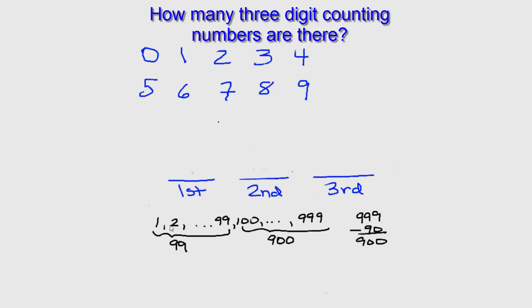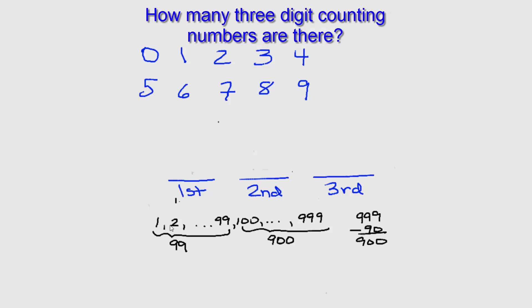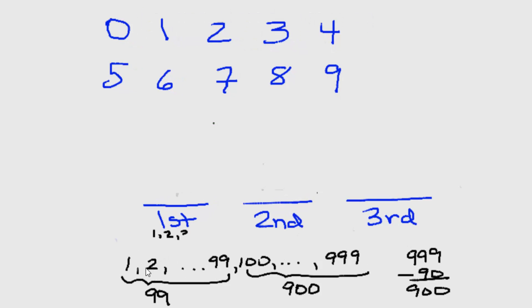Now let's see if we can come to the same conclusion using the Fundamental Counting Principle. Looking at our 3-digit numbers, you might notice that the first digit is always a number from 1 through 9. In other words, 0 is never a first digit in a 3-digit number. So we have all the options of digits 1, 2, 3, all the way up to 9.